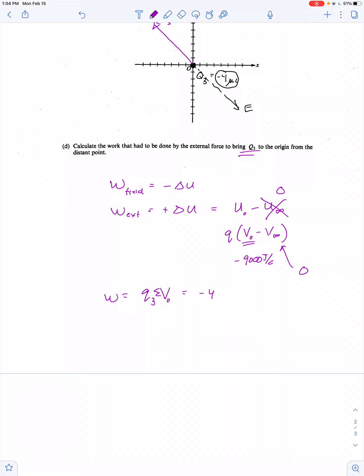So the work we're looking for is Q3 multiplied by the net electric potential at the origin, which is negative 4 times 10 to the negative 6 coulombs multiplied by negative 9,000 joules per coulomb, or instead of the thousands we can call this 10 to the 3rd. 10 to the negative 6 and 10 to the 3rd gives us 10 to the negative 3rd.